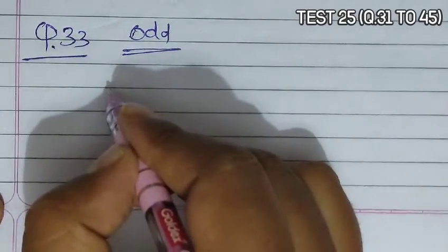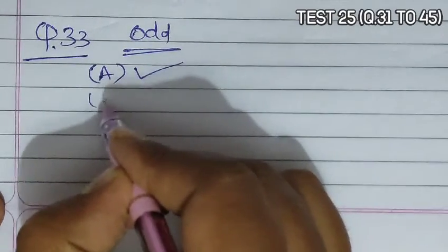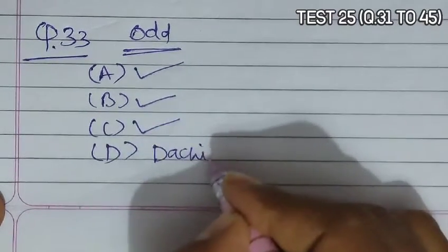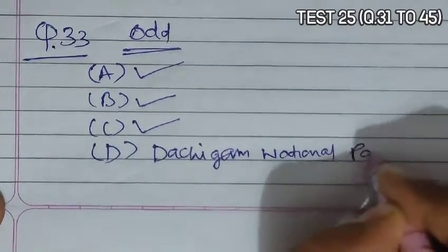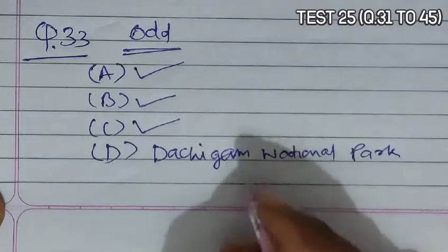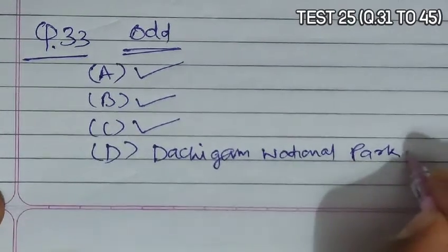Question 33 asks to identify the odd combination of habitat and the particular animal. Option A is Sundarbans and the Bengal tiger — correct. Option B is Periyar associated with elephant — correct. Option C is Rann of Kutch with wild ass — also correct. Option D is Dachigam National Park for snow leopard. Dachigam National Park is actually located 22 kilometers away from Srinagar.